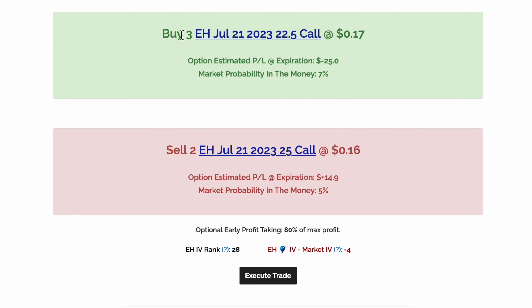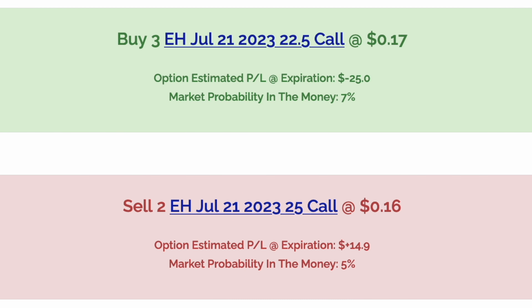...we can see that we'll be buying three 22.5 calls and selling two 25 calls. If we wanted to, we could use our broker to execute a spread trade and buy and sell these options at the same time. However, by legging in — which means buying the long options first and then selling the short options — we can get better prices from the market.